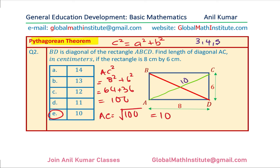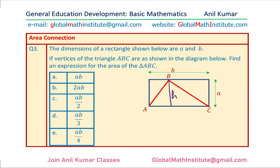The next question connects the concepts we've seen. The dimensions of a rectangle are A and B, and the vertices of triangle ABC are as shown. Find the expression for the area of triangle ABC. The area is base times height divided by 2. The height is exactly the same as side A and the base is the same as B, so the area is half of AB. Half AB is option C, the correct answer.